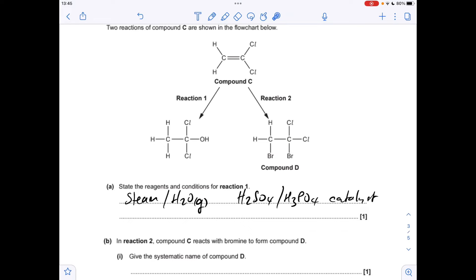Or if we start here, we get 1, 2, dibromo, 1, 1, dichloro.